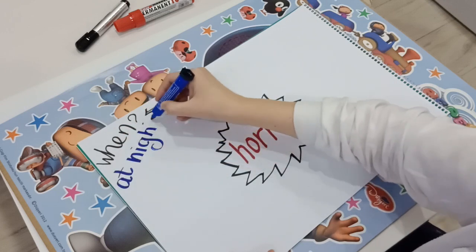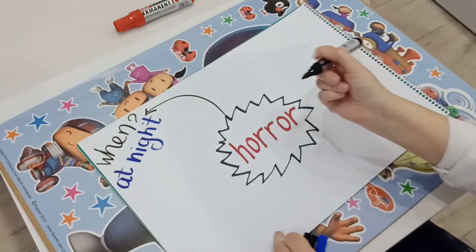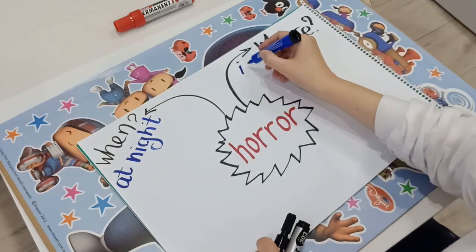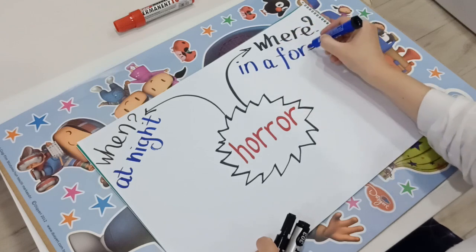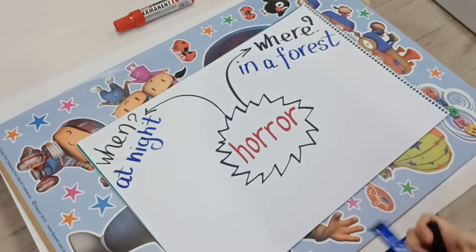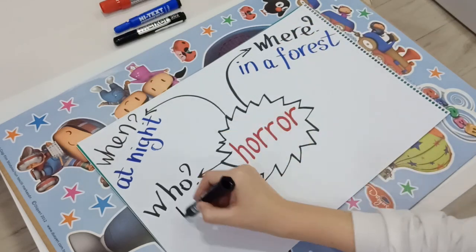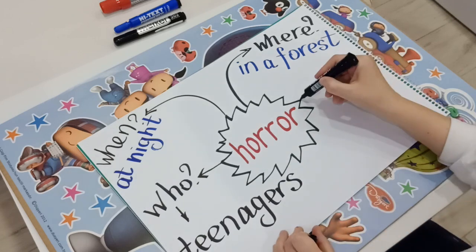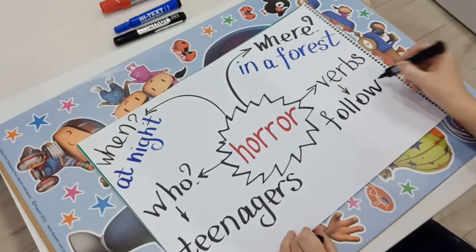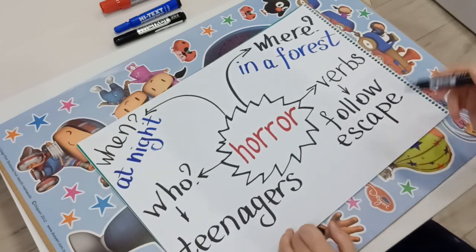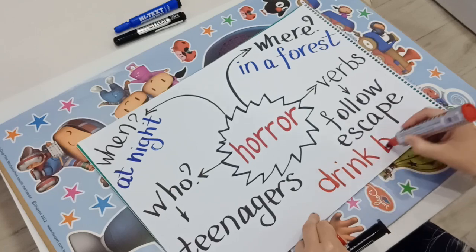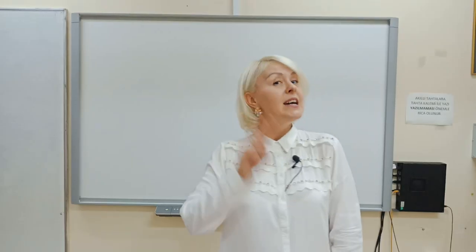For example, horror film. When do the events usually happen? At night? On Halloween? Where? In a forest? In an old castle? At school? Who are the characters? Teenagers? Monsters? Zombies? Action verbs? Escape? Run? Follow? Drink blood? Step number 2.